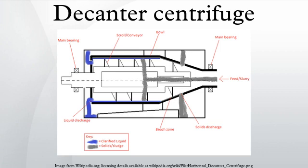The main types of decanter centrifuges are the vertical orientation, horizontal orientation and conveyor scroll. In vertical decanter centrifuges, the rotating assembly is mounted vertically with its weight supported by a single bearing at the bottom or suspended from the top. The gearbox and bowl are suspended from the drive head, which is connected to the frame. The vertical decanter allows for high temperature and/or high pressure operation due to the orientation and the rotational seals provided at one end.